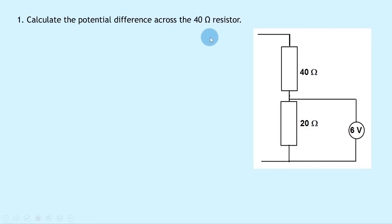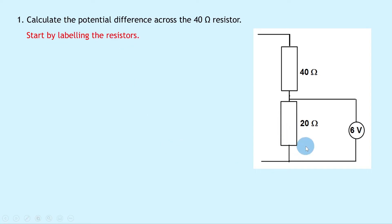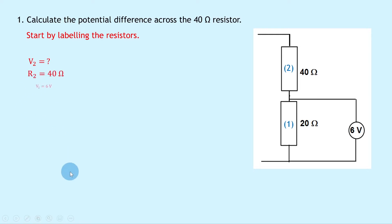Question one says to calculate the potential difference across the 40 ohm resistor. In this picture we've got a 20 ohm resistor in series with a 40 ohm resistor, and we don't have a supply voltage — the battery is cut off from the picture. But we do know the voltage across the first resistor, which is 6 volts. A good idea here is to start by labelling the resistors: the lower resistor is number one, the upper resistor is number two. So R2 is 40 ohms, V1 is 6 volts, and R1 is 20 ohms.